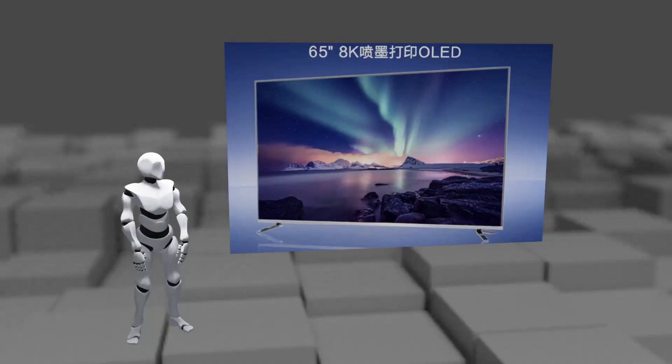TCL of China announced that it will start production of OLED TV using printing method instead of vacuum deposition method in 2023, and a 65-inch size 8K resolution TV was on display.